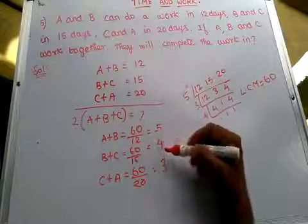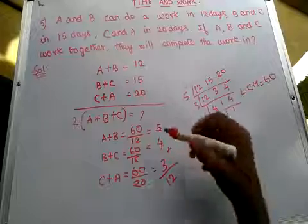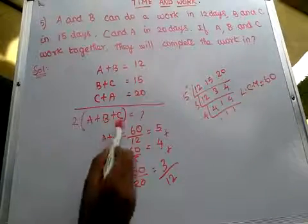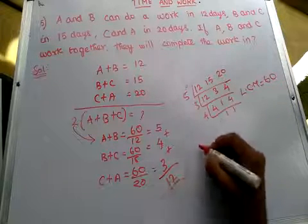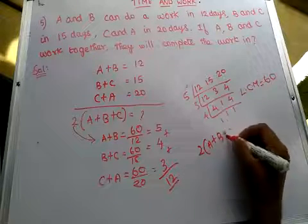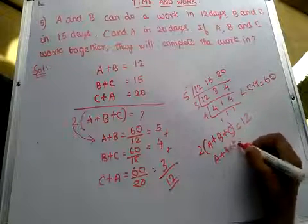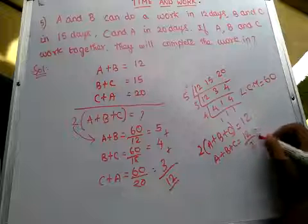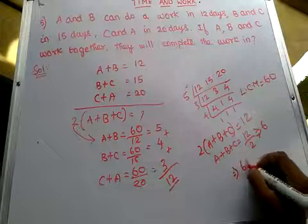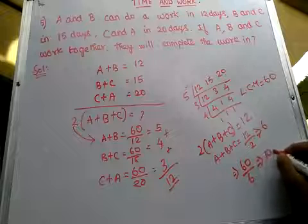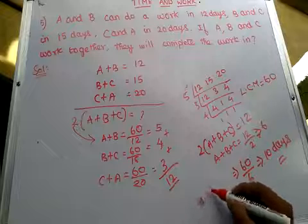Adding all three: 5 + 4 + 3 = 12. This represents 2A + 2B + 2C, i.e., 2 into (A+B+C) = 12. We take 2 to the right-hand side: A + B + C = 12/2 = 6. Then divide the LCM by 6: 60 divided by 6 equals 10. So A, B and C working together complete the work in 10 days.